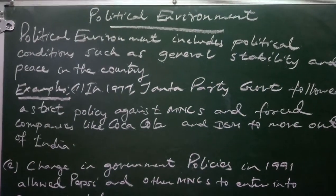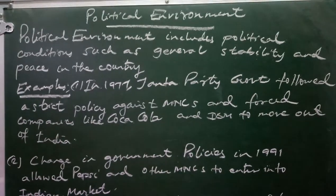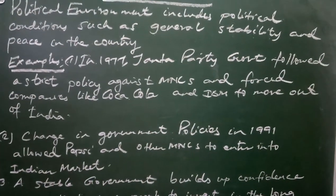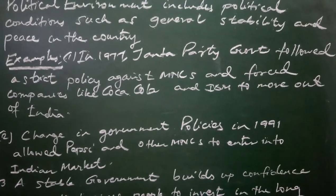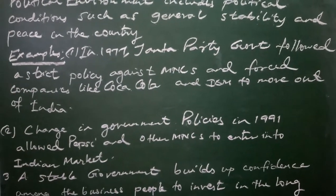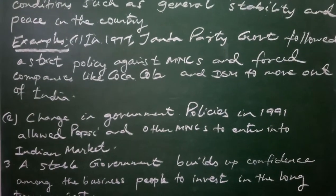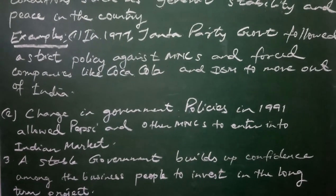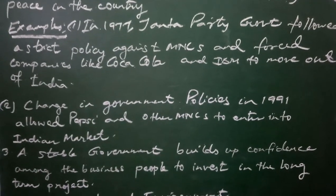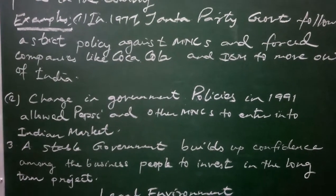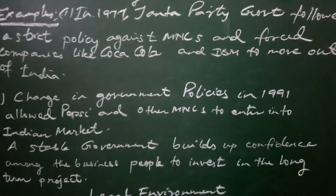Now let us discuss the next dimension of business environment — political environment. Political environment includes political conditions such as general stability and peace in the country. For example, in 1977, the Janata Party government followed a strict policy against MNCs and forced companies like Coca-Cola and IBM to move out of India. Again, policy changes in 1991 allowed Pepsi and other MNCs to enter the Indian market. If there is a stable government, it will build confidence among investors and they will be ready to invest in long-term projects.